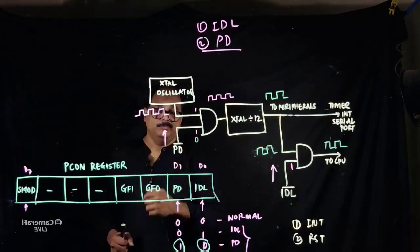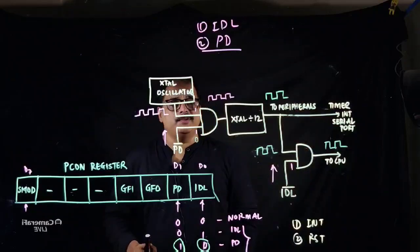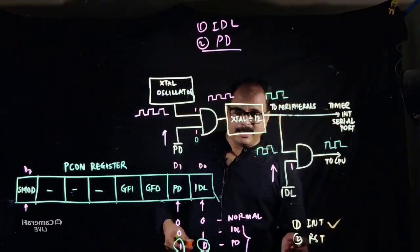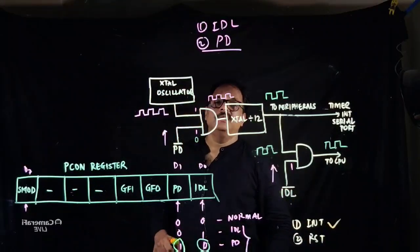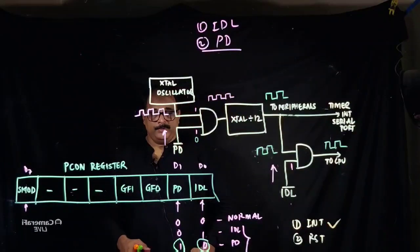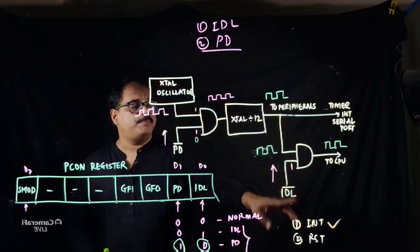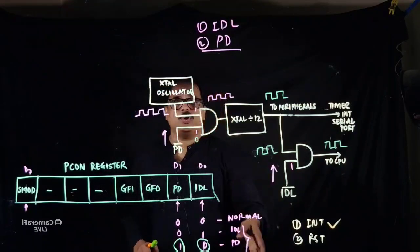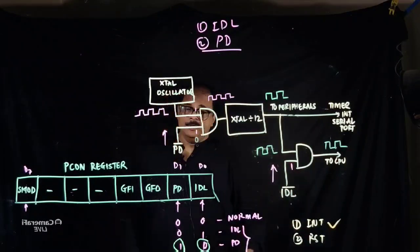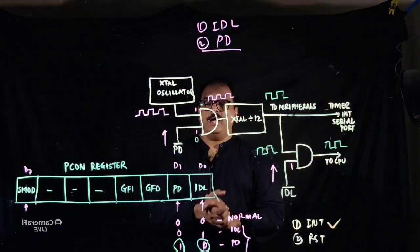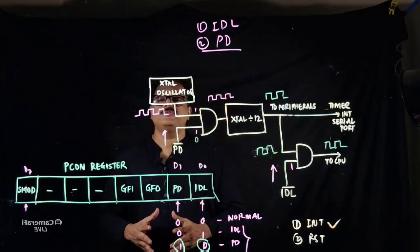In power down mode, since all peripherals are also frozen, the option of generating an interrupt to wake up the microcontroller is not available. The only option is to give a reset signal to come back to normal mode. So to summarize: in idle mode you can use either an interrupt or a reset signal, but in power down mode you can only use a reset signal. That covers both power saving modes of the 8051 microcontroller.